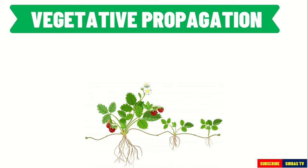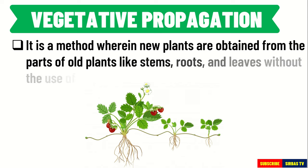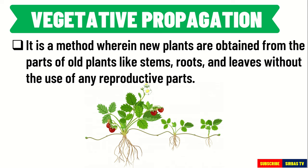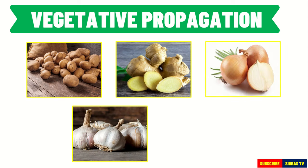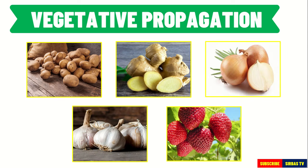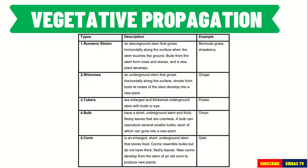The last type is vegetative propagation. It is a method where new plants are obtained from parts of old plants like stems, roots, and leaves, without the use of any reproductive parts. Potatoes, ginger, onion, garlic, and strawberry are some of the plants that can be propagated using this method. Study the table below to understand more about the different parts of a plant that can be propagated, including runners or stolons, rhizomes, tubers, bulbs, and corms.